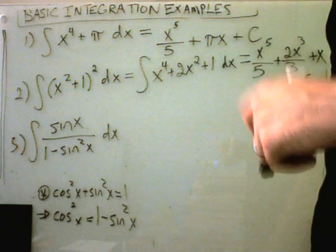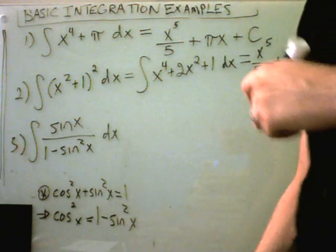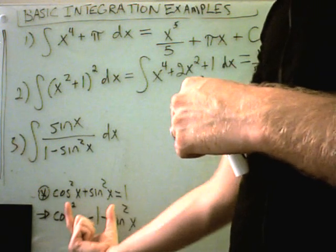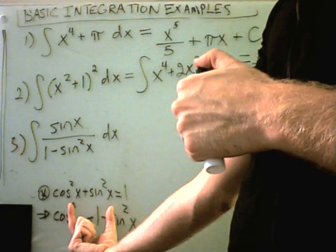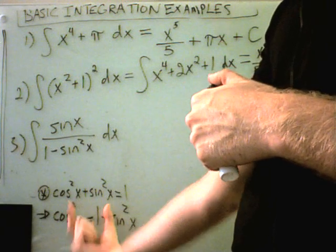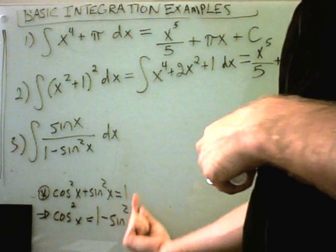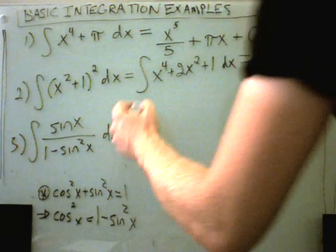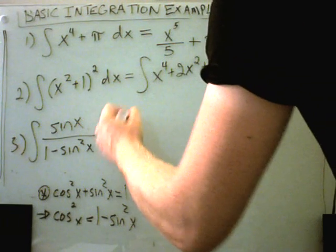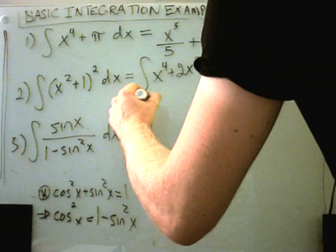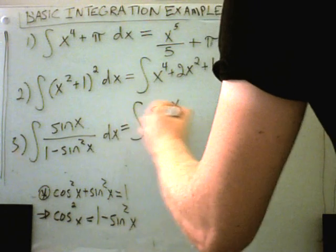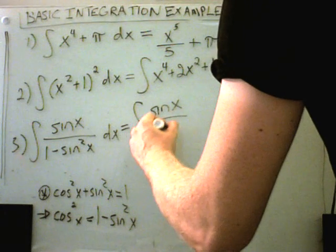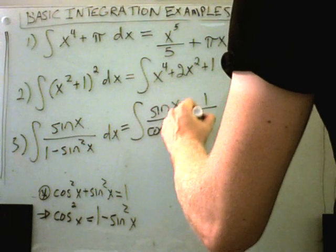So sine of x divided by one minus sine squared x. Recall the trig identity that says cosine squared of x plus sine squared of x equals one. Well if I subtract sine squared from both sides, I'll get one minus sine squared x equals cosine squared x. And that's what I'm going to plug into the bottom. So I've got sine of x, and I'm even going to bust this up so I've got cosine squared. I'm going to write it as cosine of x times one over cosine of x.